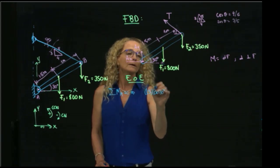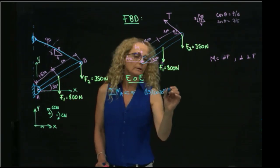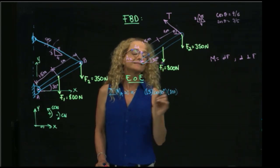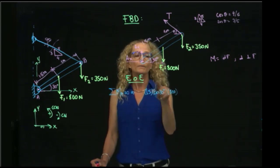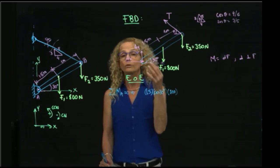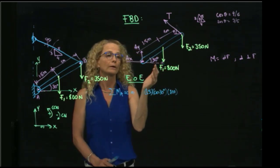The perpendicular distance will be 1.5 cosine of 30 times 800, and the sign of that moment. As you see, since I'm using the scalar approach, I will use the right-hand rule.